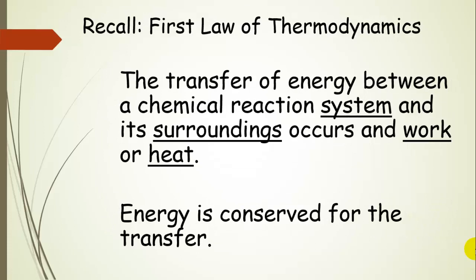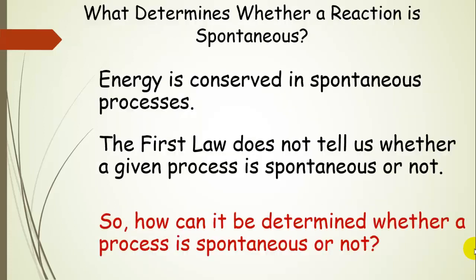Let's remind ourselves of the first law of thermodynamics, which we talked about earlier in the course. The transfer of energy between a chemical reaction system and its surroundings occurs as either work or heat, and in the process energy will be conserved. Energy is conserved in spontaneous processes, but the first law doesn't tell us whether a given process is going to be spontaneous in the forward direction. Throughout this unit, we'll figure out how to determine whether a process is spontaneous.